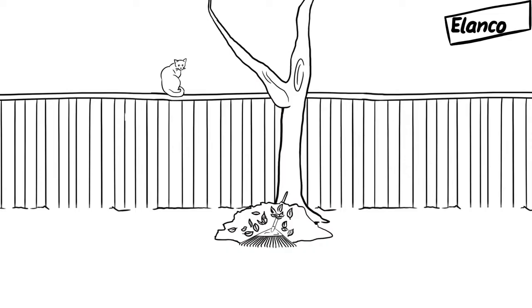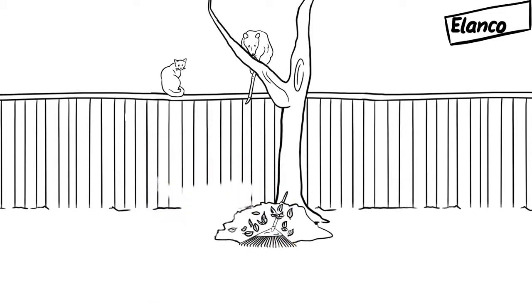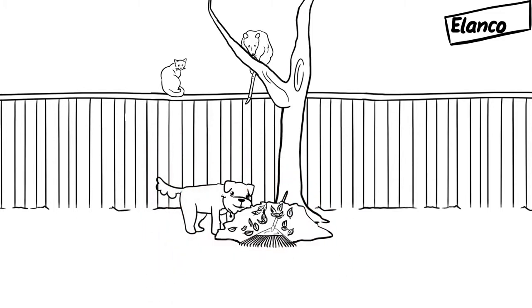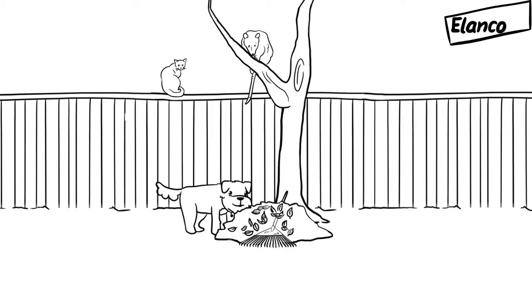Buddy most likely got those fleas from his own backyard. These parasites are well adapted to finding ways to get their next meal, be it a stray cat or a possum roaming through the backyard. So when Buddy heads outside, he's exposed to the opportunity for fleas to hop on board and hitchhike into the home.